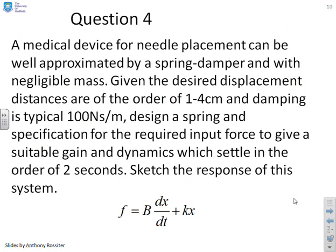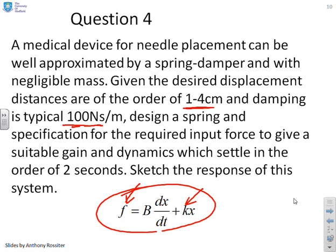Next question. A medical device for needle placement can be well approximated by a spring damper with a negligible mass. Given the desired displacement distances are of the order of 1 to 4 centimetres, it may vary a bit, and the damping is typically 100 Ns per metre. Design a spring and a specification for the required input force to give a suitable gain and dynamics which settle in the order of 2 seconds. So in other words, once you start pushing this needle, it gets to the required position in about 2 seconds. Alright, so we've put down at the bottom here the sort of equation we're talking about for a spring damper. F equals B to X to T plus Kx. And we just need to now say, how do we put in these requirements?